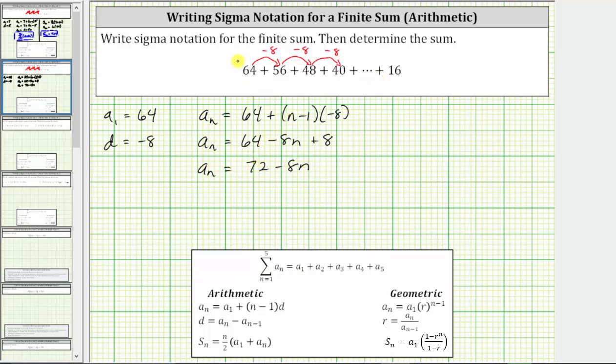And now to write the sum using sigma notation, we have the summation, and then we'll use the variable n as the index. So we begin with n equals 1.